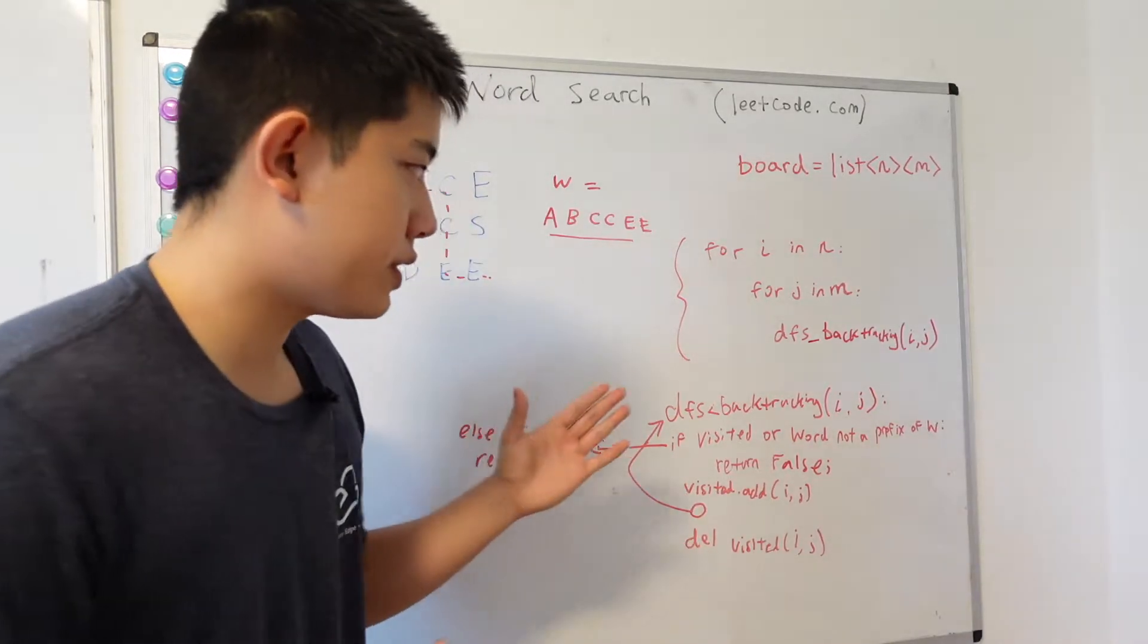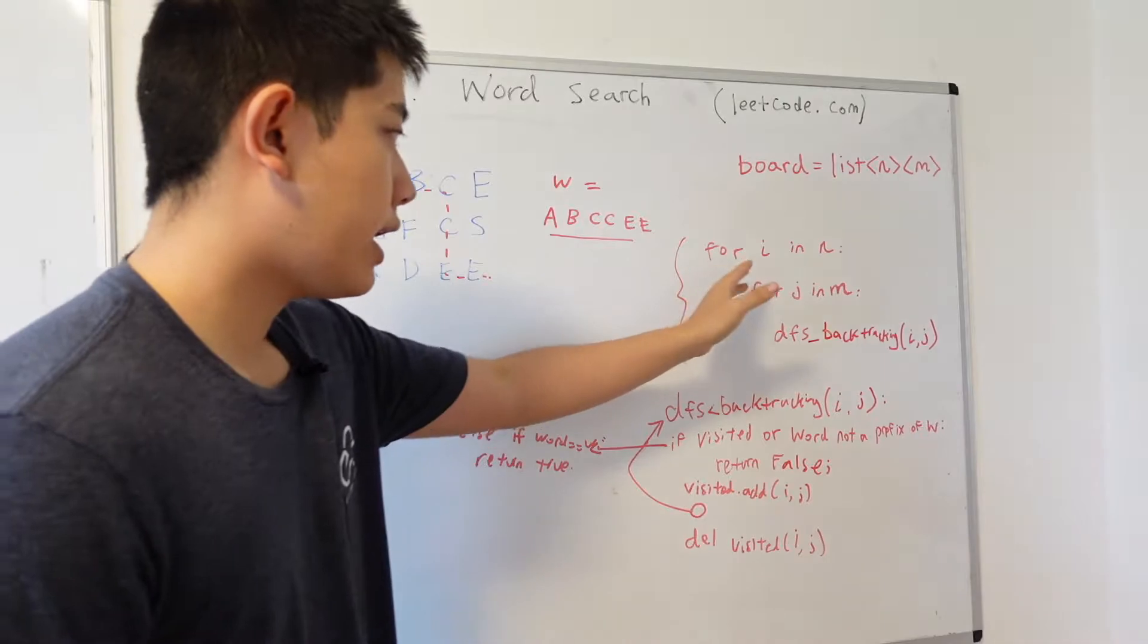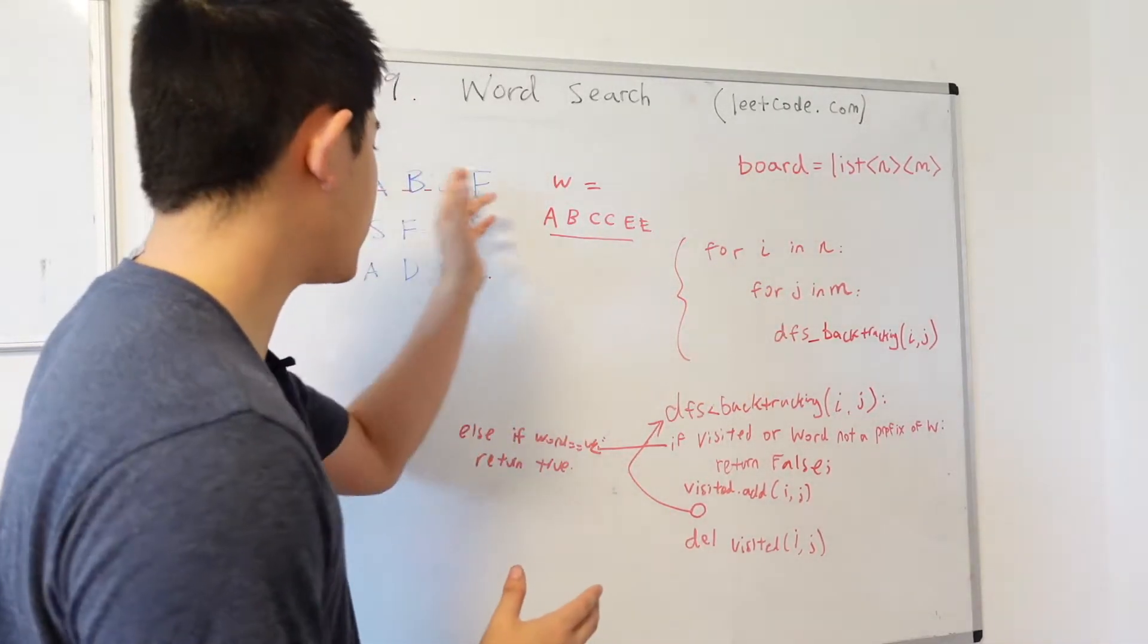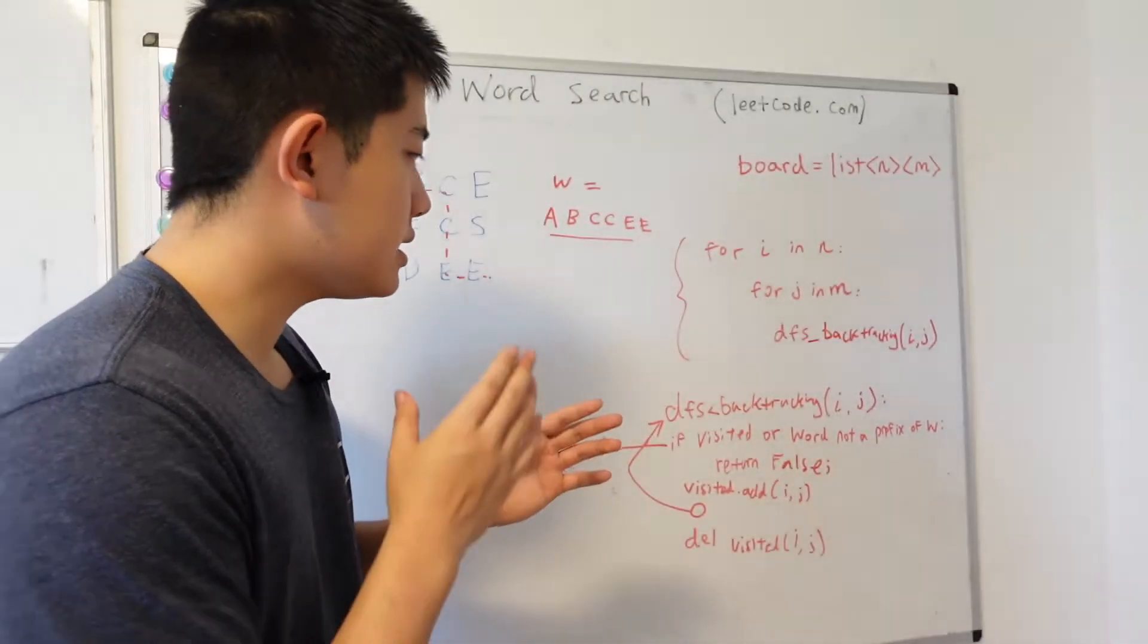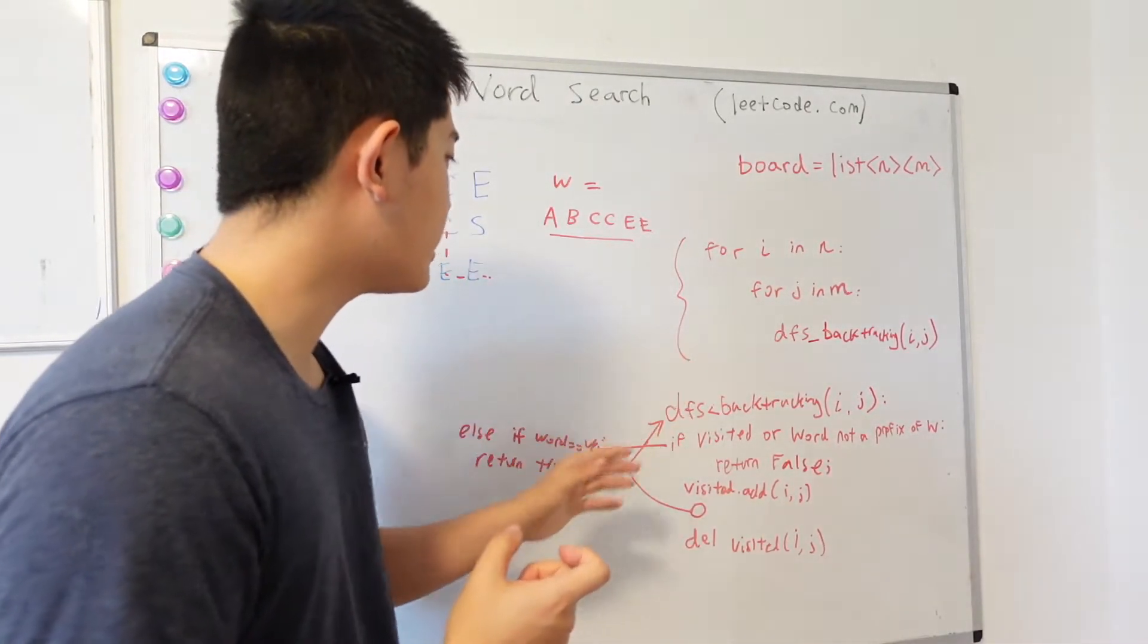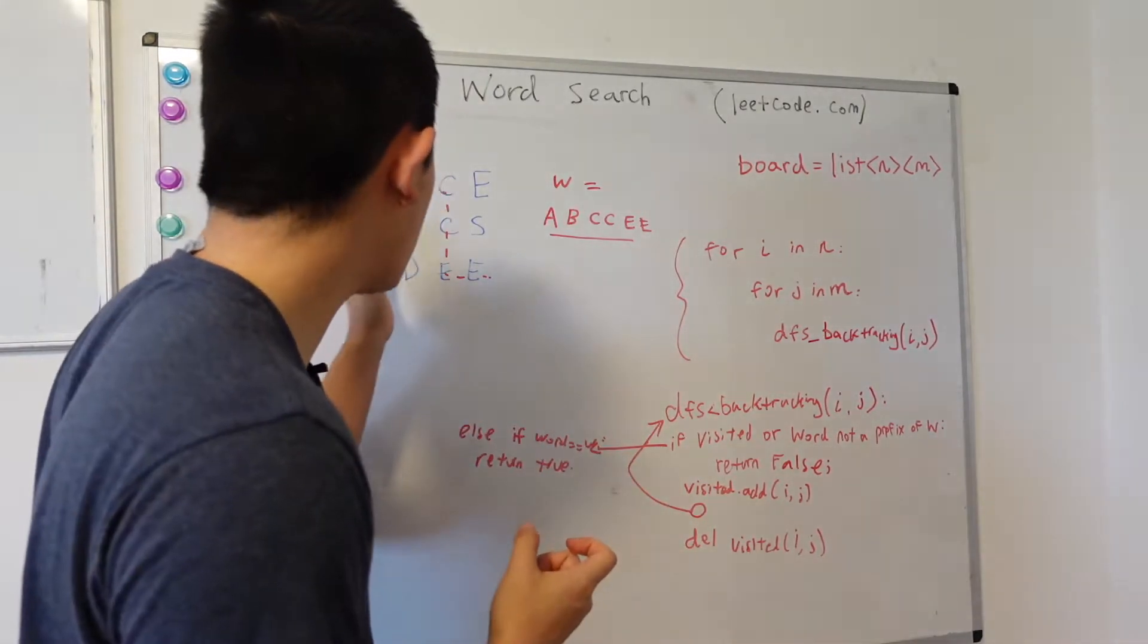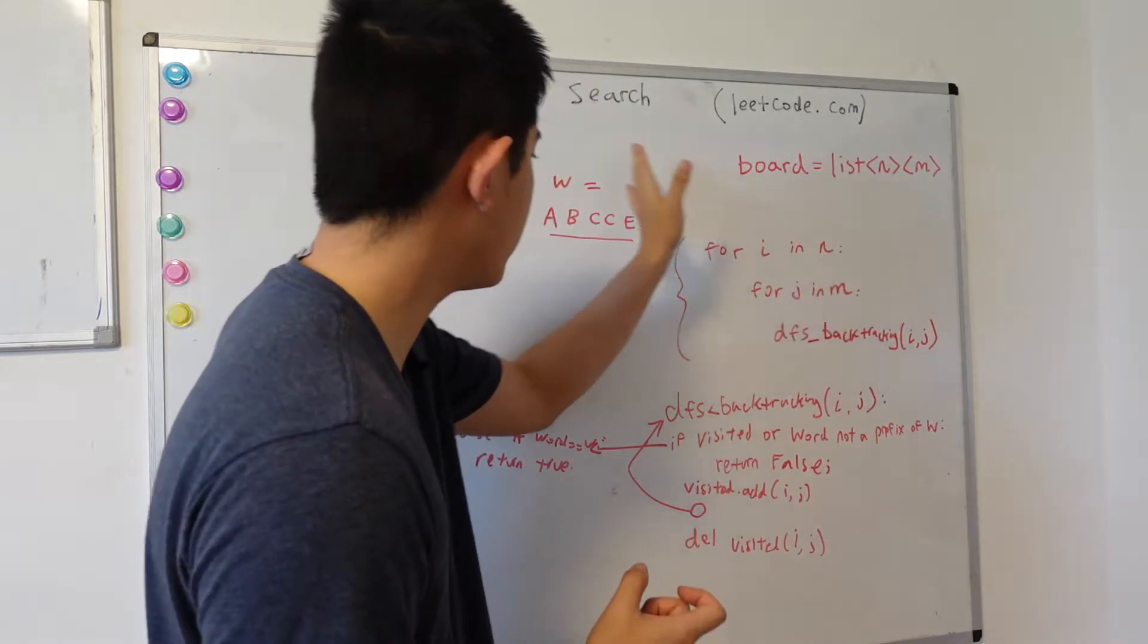So with our algorithm, what we do essentially is just iterate the entire grid and we start the depth first search on every single node over here. And the key invariant that we need to keep track of in order to continue the depth first search is that the current path is a prefix of the word that we have.